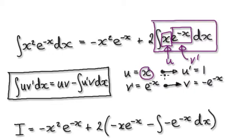then u prime equals 1. If v prime equals this, then normal v would equal this.